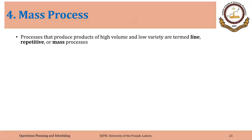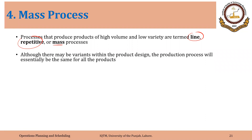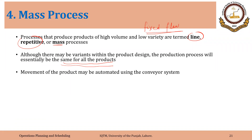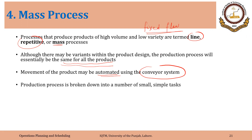It is also called line process or line production, and repetitive process. Although there may be variants within the product design, the production will essentially be the same for all the products. There is generally a fixed or standardized flow of the product in the manufacturing process. Movement of the product may be automated — generally we have conveyor belts that move the product during its way towards manufacturing. The production process is broken down into a number of small, simple tasks, requiring specialized workforce as well as specialized equipment.